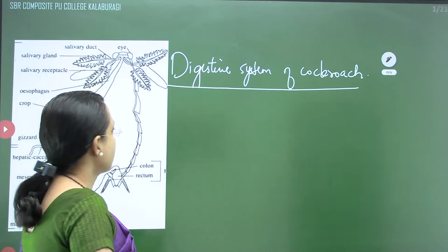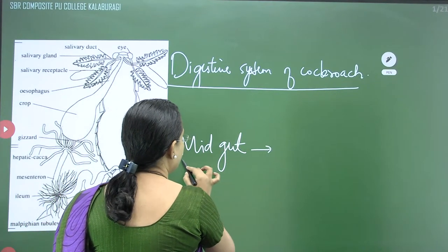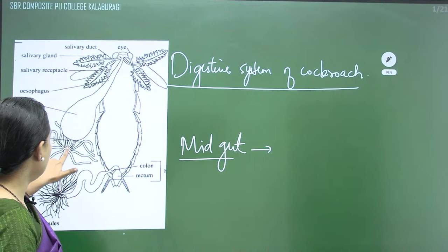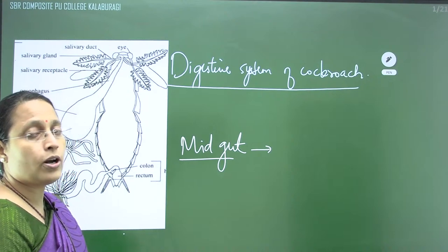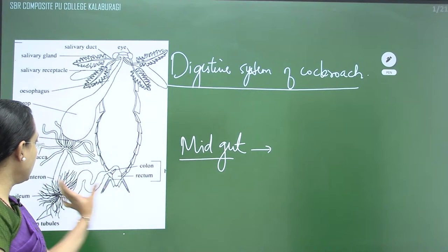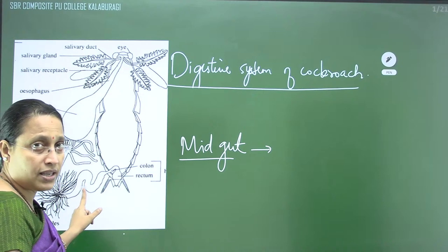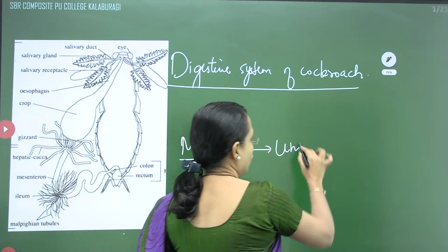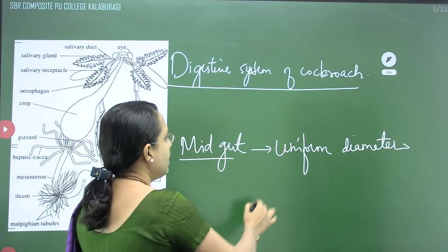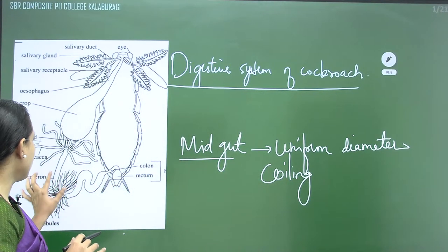The foregut ends with the gizzard. Next comes the midgut, also called mesenteron. The midgut is a relatively narrow tube of uniform diameter — there is no variation in diameter as can be seen in the hindgut. Slight coiling can be observed in the mesenteron as well as in the hindgut, meaning the entire digestive system of cockroach is not straight but coiled.